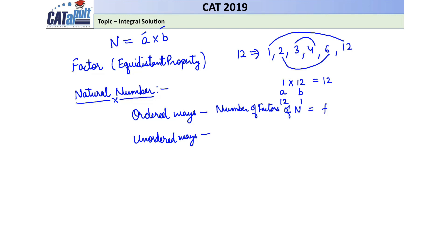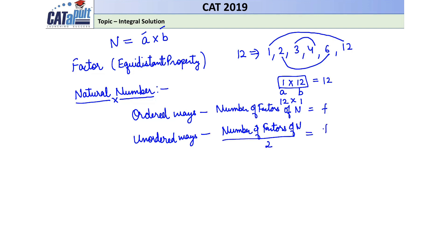Similarly if we have to find unordered ways — in unordered ways, 1 × 12 is only 1 solution. The question framing will be: write N as a product of 2 natural numbers. Now if you write it as 1 × 12 and you write it as 12 × 1, in both cases we are using the same numbers — 1 and 12. So in unordered ways, ordering of elements is not important. In ordered ways, ordering of elements is important. So unordered ways = number of factors of N divided by 2, which is F/2. These are our natural number solutions.